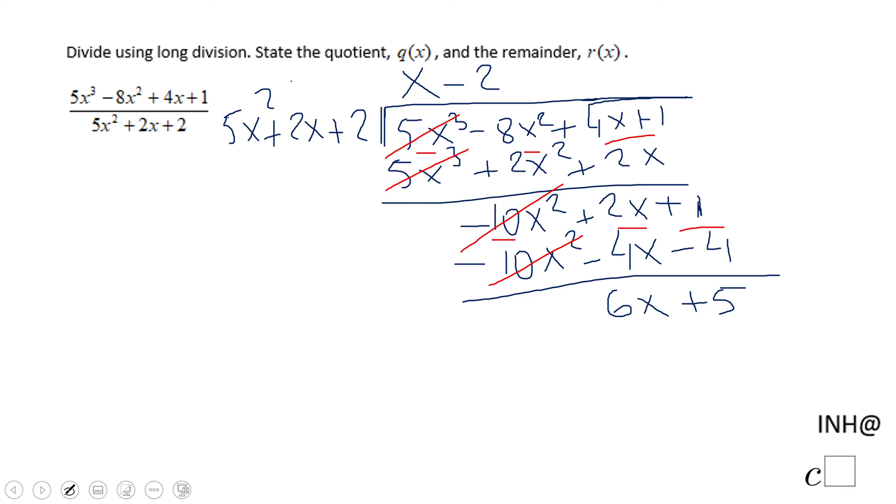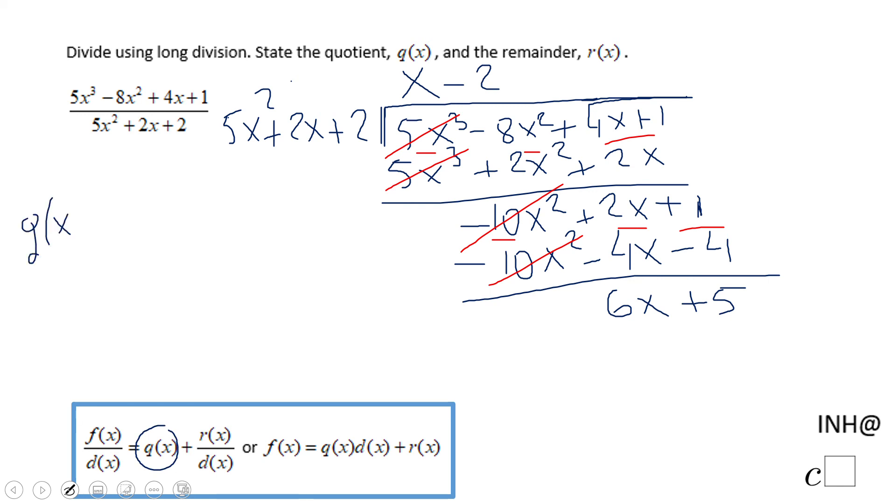So now we can look to what q of x is. q of x is nothing else than our answer, which is x minus 2. And r of x is the remainder, 6x plus 5.